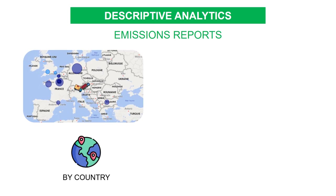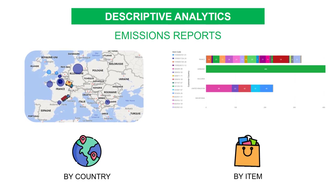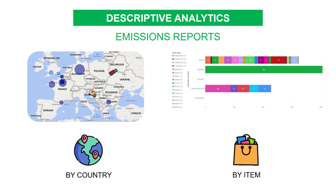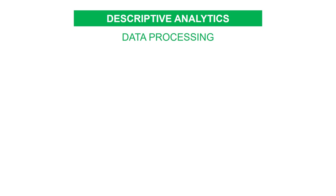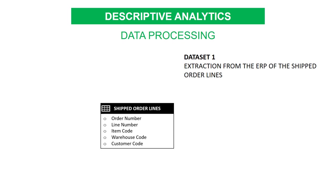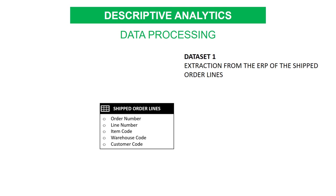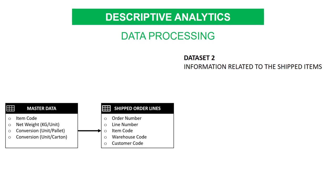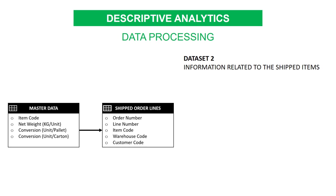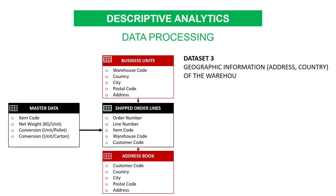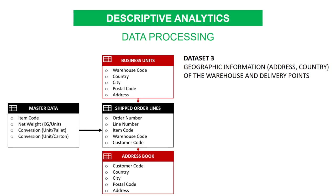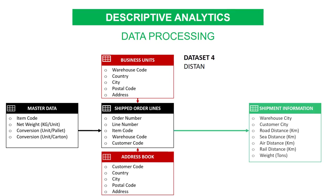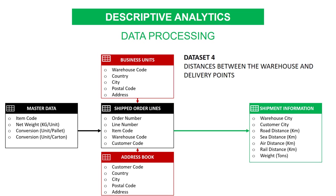A basic example is the report of emissions of your distribution network — by country with a bubble map, or by item with a bar plot. This requires extracting, transforming, and loading data from multiple sources. The main source is the table of shipped order lines with order number, item code, warehouse code, and delivery location. You can join master data to add unit of measure conventions to estimate volume and weight in tons, then join departure and delivery locations to calculate distances. You now have a single source of harmonized shipment records with all the information needed to calculate your CO2 emissions.